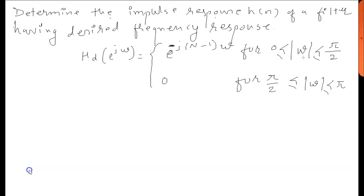And it is 0 for π/2 ≤ |ω| ≤ π. N equals 7.